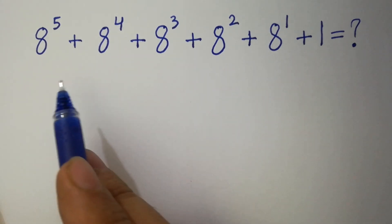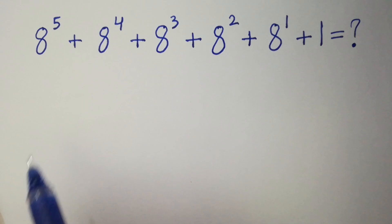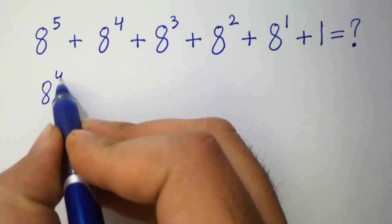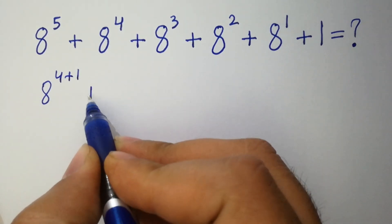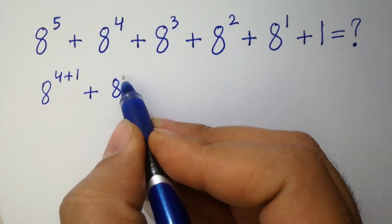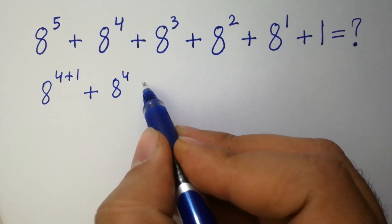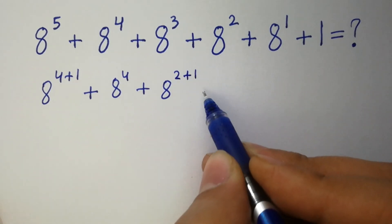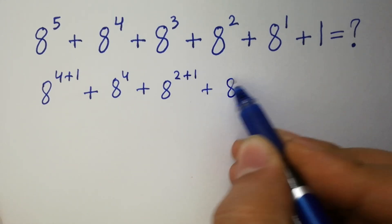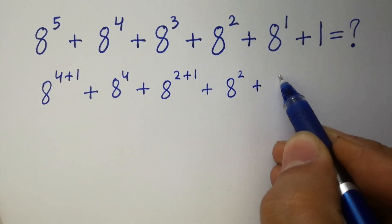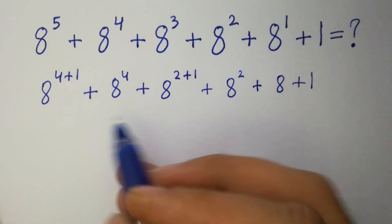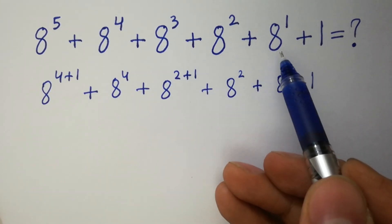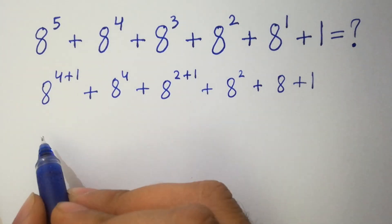This question is the same as: 8 to the power 4 plus 1, plus 8 to the power 4, plus 8 to the power 2 plus 1, plus 8 to the power 2 plus 8 plus 1. Since 4 plus 1 is 5, 2 plus 1 is 3, and 8 to the power 1 is 8.